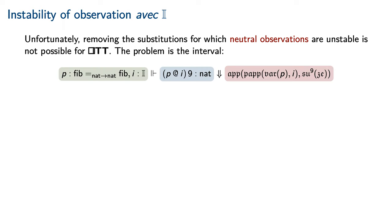Consider the case that we are working in the context of a proof P that the Fibonacci sequence is equal to itself and an additional variable I of interval sort. Projecting the i-th face of the proof P, we obtain a function between the natural numbers, which, if we apply to the number 9, gives us a natural number. The normal form of this natural number is a neutral.